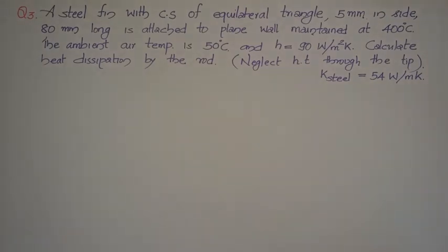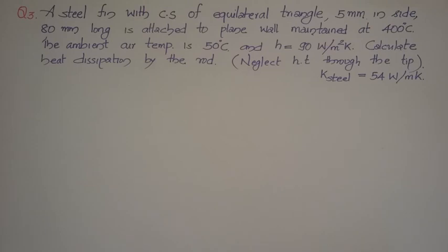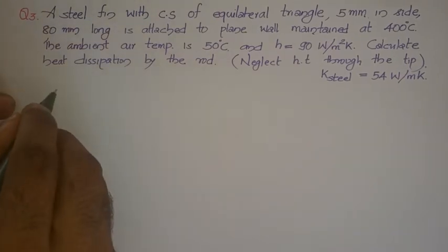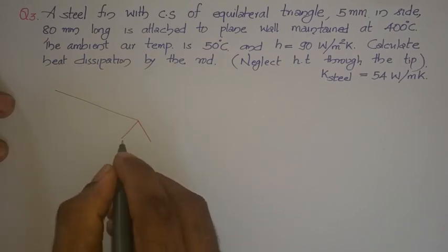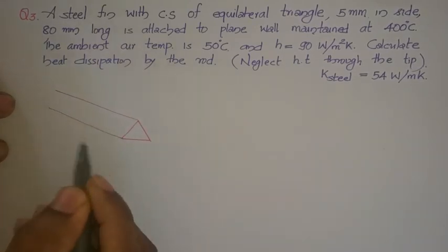Welcome. In this video we will be solving some problems from fins Case 2 and 3. Here we are having a steel fin with a cross-sectional area where the cross section is of equilateral triangle shape. Its sides are given, length is given, and it is attached to a plane wall which is maintained at 400 degrees Celsius. Ambient temperature, h, and k are given, and you have to calculate the heat dissipation.